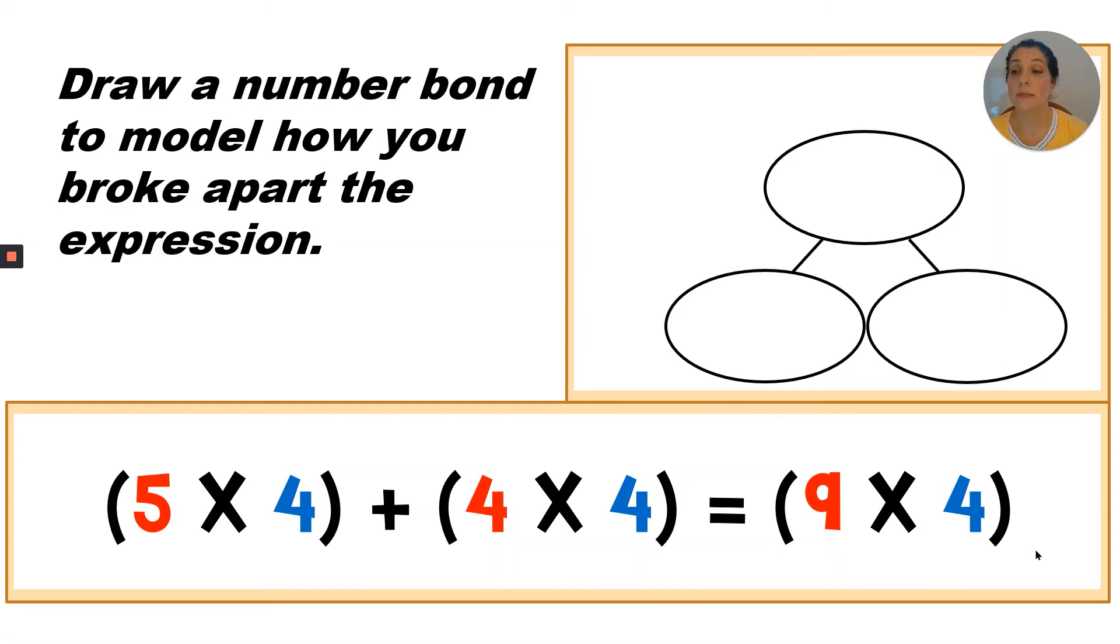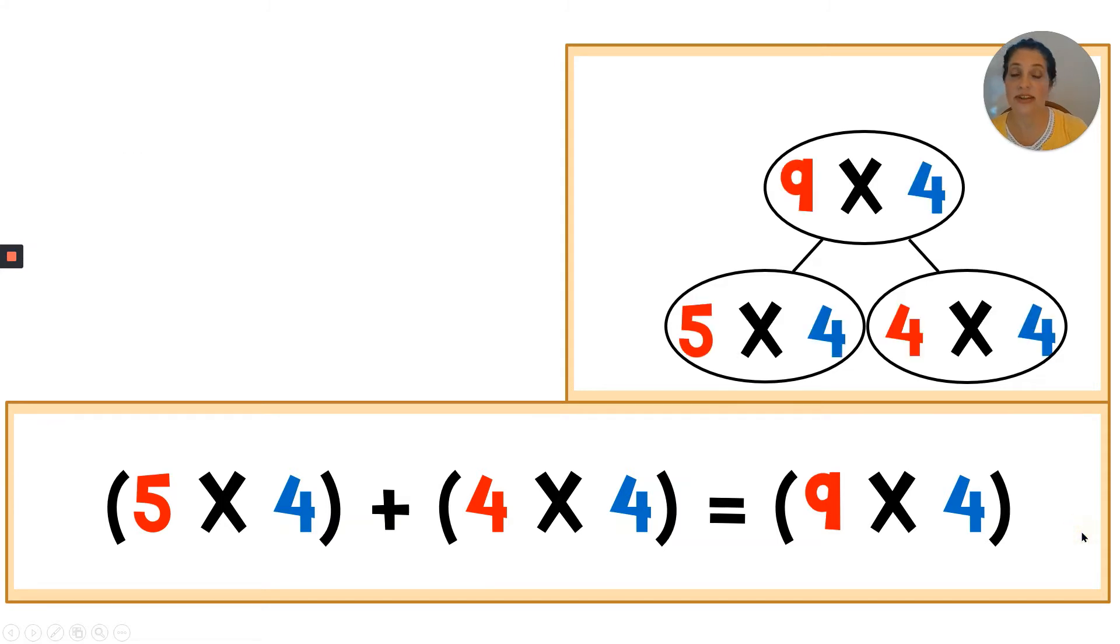Draw a number bond to model how you broke apart the expression. So let's think. What should go in the top of the number bond? Yes, the largest expression. So we'll be moving this largest expression to the top, and then we will add the smaller expressions to the bottom. So we can add five times four to this circle, and four times four to this circle. It would look like this.